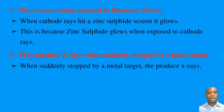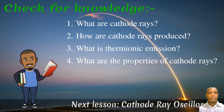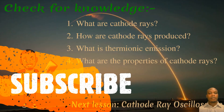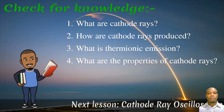Don't forget to subscribe so you can watch the upcoming video on X-rays to see how cathode rays produce them. That's the end of the lesson. In this lesson you should now understand what cathode rays are, how they are produced, what thermionic emission is, and what the properties of cathode rays are. In the next lesson we're going to talk about the cathode ray oscilloscope.